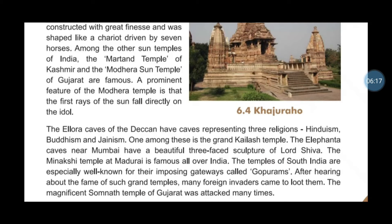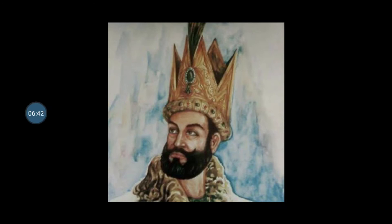Due to the fame of these grand temples, many foreign invaders came to loot them. The magnificent Somnath temple of Gujarat was attacked many times. Mohammad Ghazni, a well-known warrior of the Rajput age, conquered territories including Peshawar, Kashmir, Nagaur, Multan, and Ajmer, bringing these states under his control.